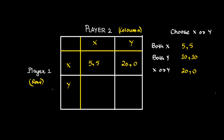When player 1 chooses Y and player 2 chooses X, then player 1 gets 0 and player 2 gets 20. When player 1 chooses Y and player 2 also chooses Y, then both of them get 10, 10.